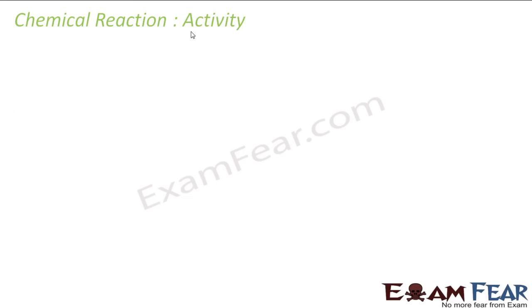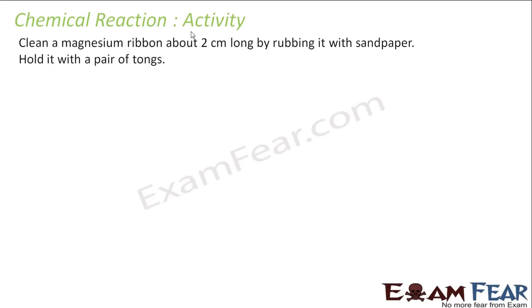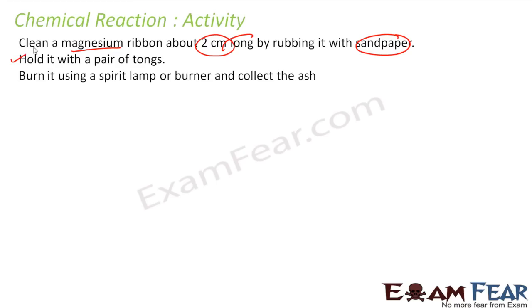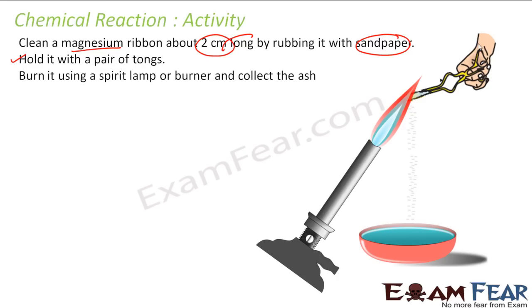So before we even define chemical reaction, let us have some activity of chemical reaction. So what I am doing is I am taking a clean magnesium ribbon around 2 cm long. And I clean that with sandpaper to make sure that there is no dust or something. And I hold with a pair of tongs. So burn this using a spirit lamp and collect some ash.